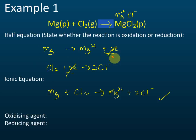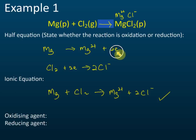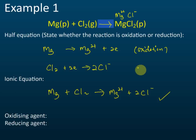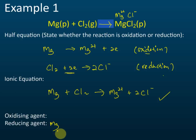Now to label which is oxidation and which is reduction: magnesium to magnesium ions releases two electrons — electrons on the right-hand side means losing electrons — so this is oxidation. Chlorine gains electrons — electrons on the left-hand side means gaining electrons — so this is reduction. The substance undergoing oxidation is the reducing agent, so magnesium is the reducing agent. The substance undergoing reduction is the oxidizing agent, so chlorine is the oxidizing agent.